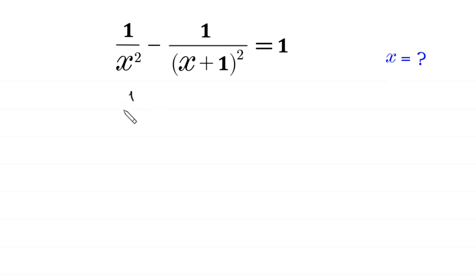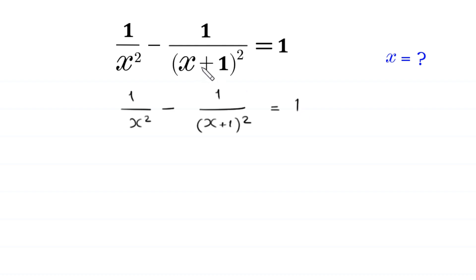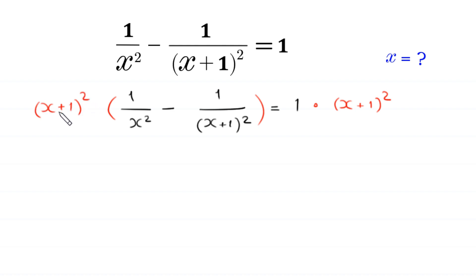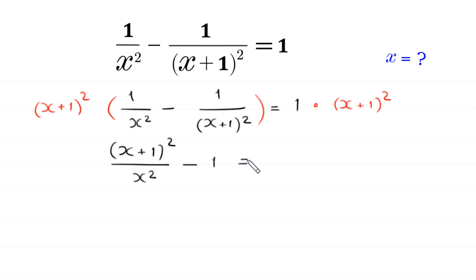The given equation is 1 divided by x squared minus 1 over (x plus 1) whole squared is equal to 1. From here, we multiply both sides of this equation by the expression (x plus 1) whole squared. At the left hand side, (x plus 1) whole squared times 1 over x squared becomes (x plus 1) whole squared divided by x squared. And (x plus 1) whole squared times 1 over (x plus 1) whole squared gives negative 1, which is equal to 1 times (x plus 1) whole squared.